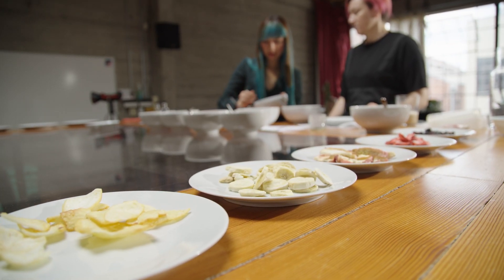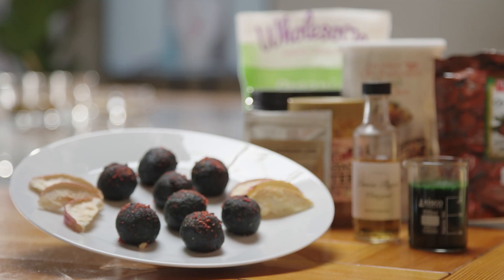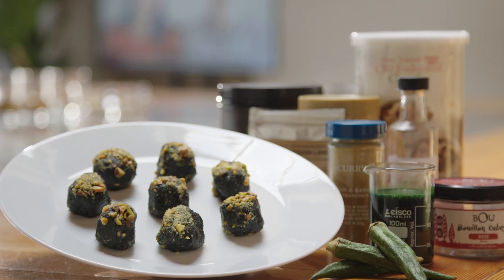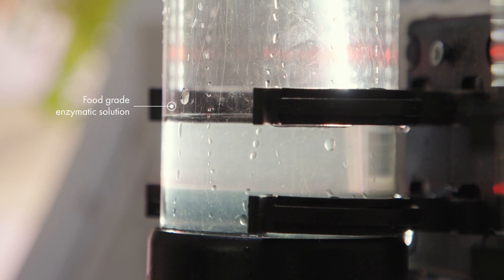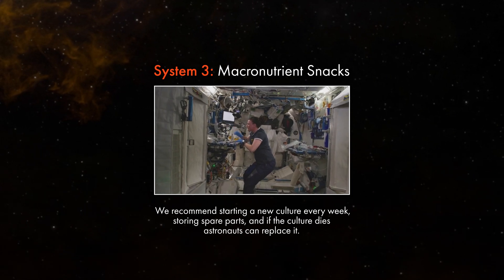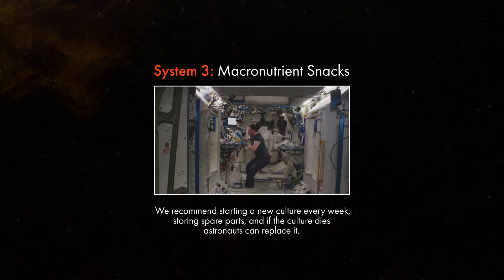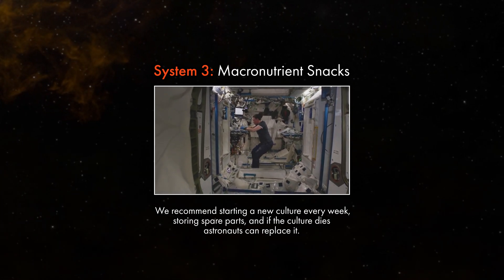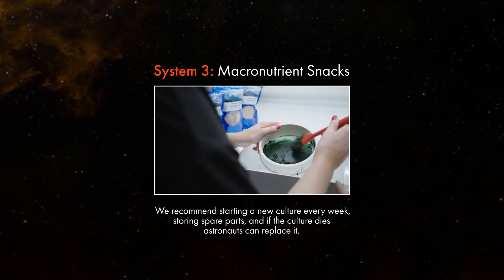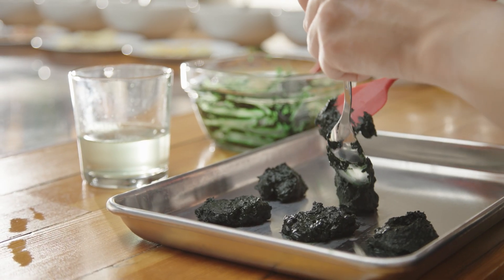Astronauts can vacuum seal extra bites and refrigerate them up to 7 days. Minimal hand interactions with the microalgae helps reduce the risk of contamination throughout the process. To clean, use an enzymatic solution, as with the coffee system. For a constant supply of algae, we recommend starting a new culture every week. Be sure to stow a few spare parts like LED strips and bioreactor components in case repair or replacement is needed. In case the culture dies, astronauts can replace it with a new batch of microalgae stored in a reserve compartment.